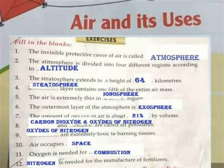The air is extremely thin in the Ionosphere. The outermost layer of the atmosphere is the Exosphere. The amount of oxygen in air is about 21% by volume. Carbon dioxide and oxides of nitrogen are called air pollutants.